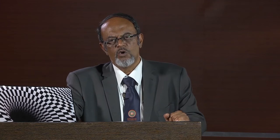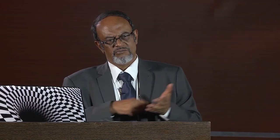Because of all these limitations, the more generally used system is the spring control. Here the restoring force is provided by a non-magnetic spiral spring, typically made of phosphobronze. This spring is mounted on the shaft of the pointer — a spiral spring is like the spring in your watch or clock. When the pointer deflects, the spring gets twisted in the opposite direction, so the spring tries to restore the pointer. The twist on the spring, because of the pointer movement, creates the restoring torque, which is proportional to the angle of twist.